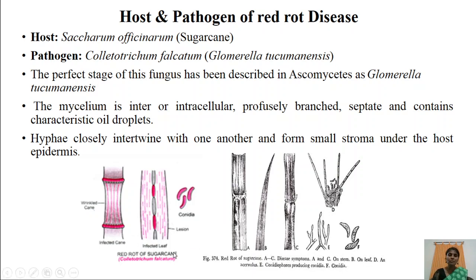Here we can observe the shriveled stem of sugarcane infected by the pathogen. As a result of pathogen infection, we can also observe symptoms on the leaf surface. Red lesions are developed at the mid-rib region and also in the foliar region. These are the spores or conidia of the fungus Colletotrichum falcatum.